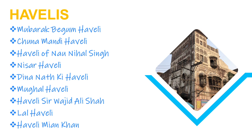There are many havelis in old Lahore city, and some are now turned into hotels and restaurants. Some old havelis are: Mubarak Begum Haveli, Juna Mandi Haveli, Haveli of Naunihal Singh, Nisar Haveli, Dina Nath ki Haveli, Mughal Haveli, Haveli of Sir Wajid Ali Shah, Lal Haveli, and Haveli Mian Khan. These havelis have a unique structure of architecture, so if you visit Lahore you should visit them to see the older architectural style.